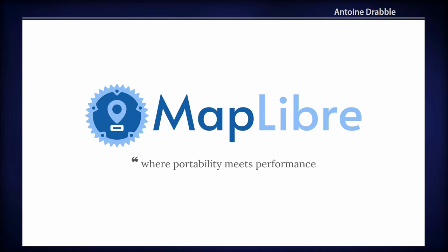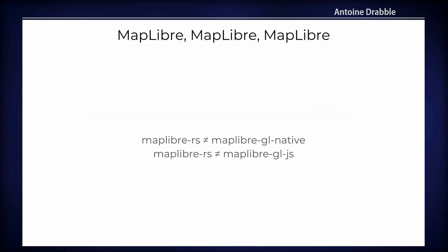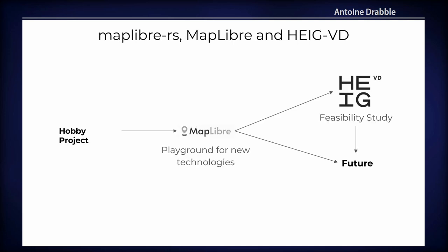MapLibre RS is basically where portability meets performance. There are multiple MapLibre projects — MapLibre GL Native, MapLibre GL JS, and now MapLibre RS — and all are distinct. MapLibre GL Native is the previous C++ implementation running on native platforms, and MapLibre GL JS powers the browser. MapLibre RS started as a hobby project last year, and after release it gained traction when MapLibre noticed it aligned with their goals, starting out as a playground for new technologies.